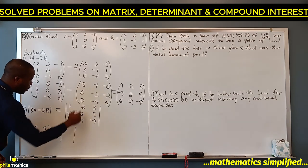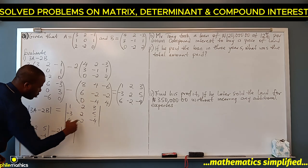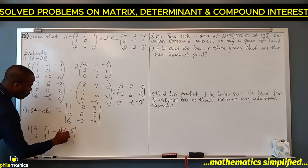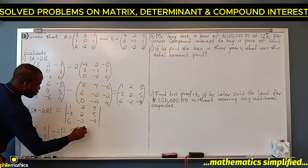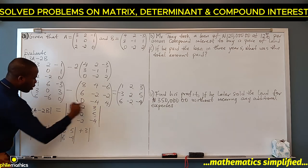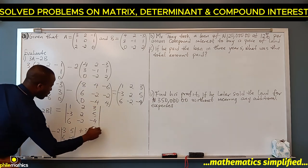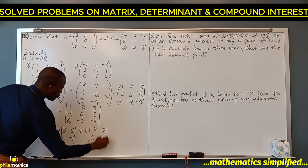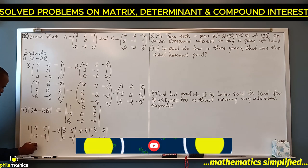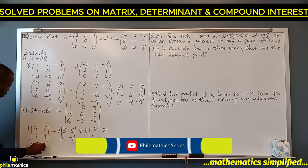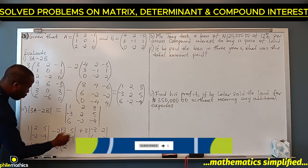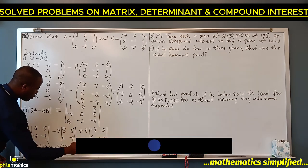Then minus 2 multiplies the submatrix obtained by deleting its column and row: -3, 5, 6, -4. Plus 3 multiplies the submatrix obtained by deleting its column and row: -3, 2, 6, -2. So the determinant becomes: 1 times (-8 - (-10)), which is -8 + 10 = 2.